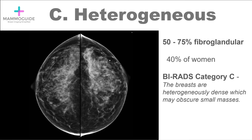Category C is heterogeneous. The breasts are heterogeneously dense, which may obscure detection of small masses. This is when there's between 50% to 75% fibroglandular tissue, and it's nearly 40% of women that have this type of breast tissue. This is the first category considered dense breast tissue. It does start to confer a slight increased risk in developing breast cancer — a relative risk of about 1.2 — and the literature has shown this definitively.